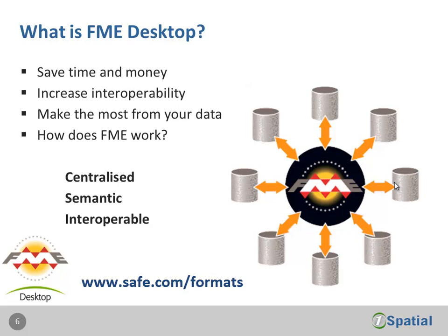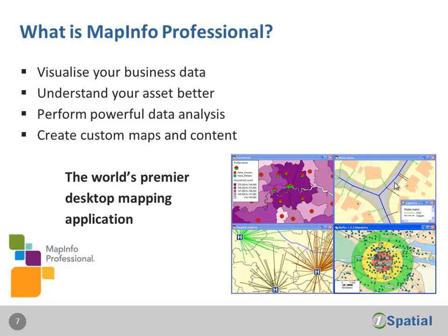Essentially, FME is a centralized, semantic, and interoperable tool. MapInfo Professional, on the other hand, is a GIS tool. It allows you to perform powerful spatial analysis, understand your data better, and ultimately create custom maps and content that you can include in reports or give to customers. It's the world's premier desktop mapping application.